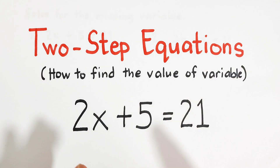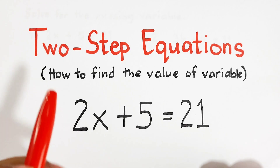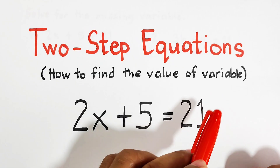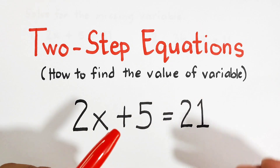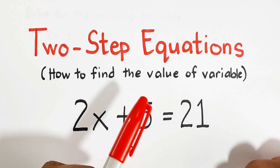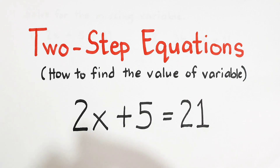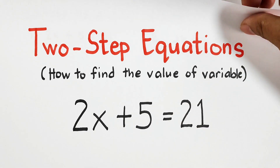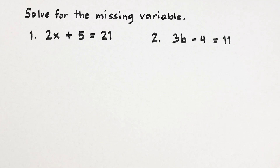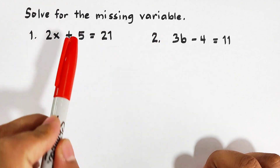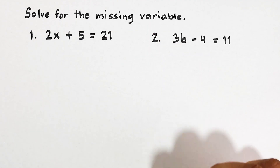Hello everyone, this is Teacher Gon. In today's video we will talk about solving two-step equations. Our target here is to find the value of the variable or the missing variable. Last time we uploaded a video where we solved one-step equations — I will put the link in the description box. So without further ado, let's do this topic. The first two examples are the equations we have in this tutorial. We are asked to solve for the missing variable of each equation.